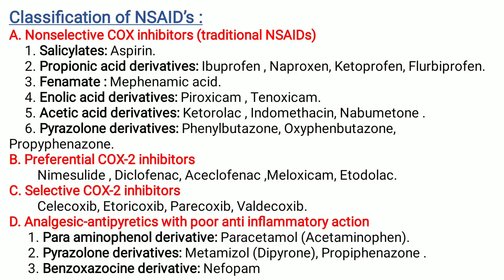Second category is preferential COX-2 inhibitors. Examples are nimesulide, diclofenac, aceclofenac, meloxicam, etodolac. Third category is selective COX-2 inhibitors. Examples are celecoxib, etoricoxib, parecoxib, and valdecoxib.